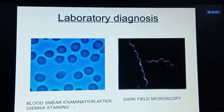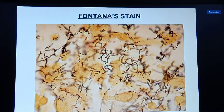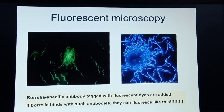Laboratory diagnosis of Lyme disease includes blood smear examination after Giemsa staining to visualize the bacteria. Dark-field microscopy is used to visualize the bacteria in a dark-field. Fontana staining — a color stain — shows the bacteria in black. Fluorescent microscopy uses fluorescent dye that binds with antibodies to the Borrelia, producing visible fluorescence.